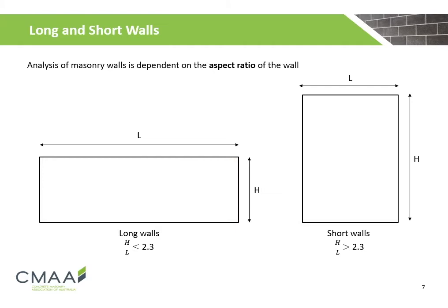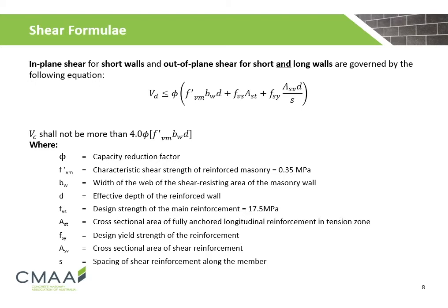The design of shear walls requires us to consider the aspect ratio of the masonry wall itself. If the height-to-length ratio is less than or equal to 2.3, we consider the wall as a long or squat wall. If the height-to-length ratio is more than 2.3, we consider the wall as a short or tall wall.